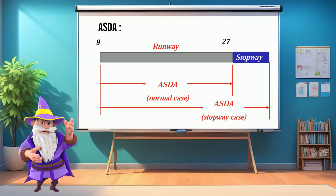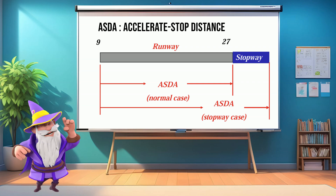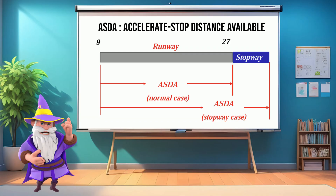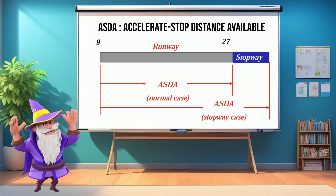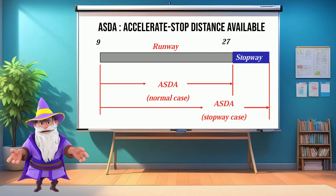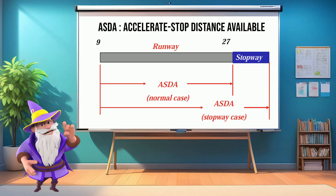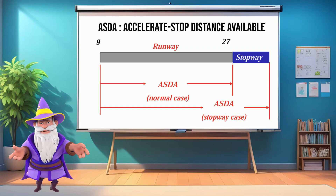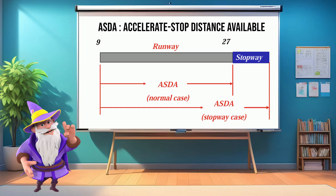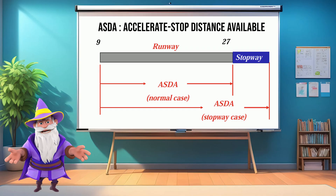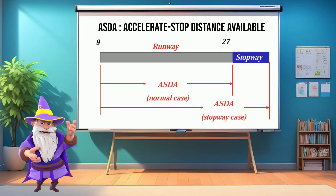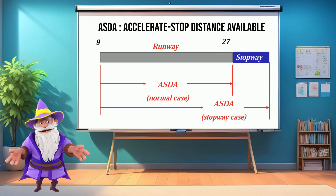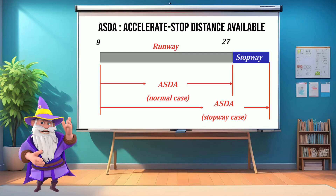Next, we have the ASDA — Accelerate Stop Distance Available. ASDA is one of the most critical declared distances when it comes to rejected takeoff scenarios. It is the total distance available for an aircraft to accelerate to decision speed V1, then abort the takeoff and come to a full stop without running off the end of the runway. It includes both the takeoff run available, TORA, and, if present, a stopway.